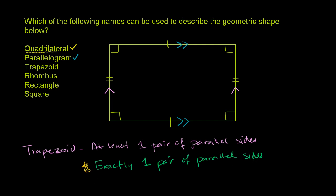The definition most people refer to is exactly one pair of parallel sides. When most people think of a trapezoid, they think of something where one side is parallel to another, but the other two are not parallel. The 'at least one pair' definition would include parallelograms. But going with exactly one pair of parallel sides — this shape has two pairs of parallel sides, so I will not call it a trapezoid. Though it's important to clarify, because under the other definition it would qualify.